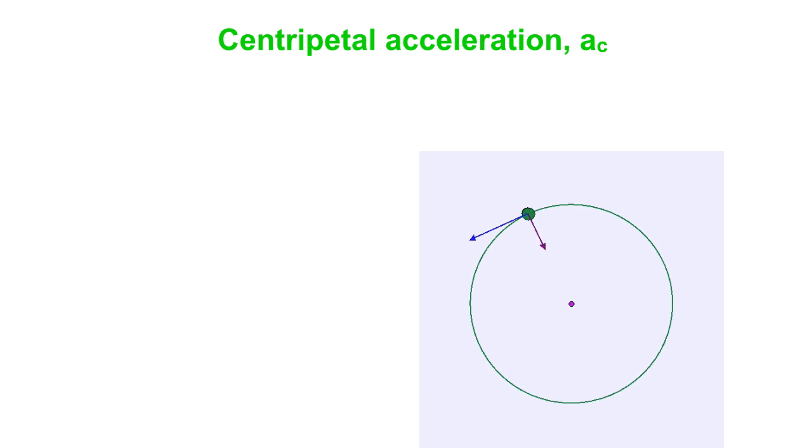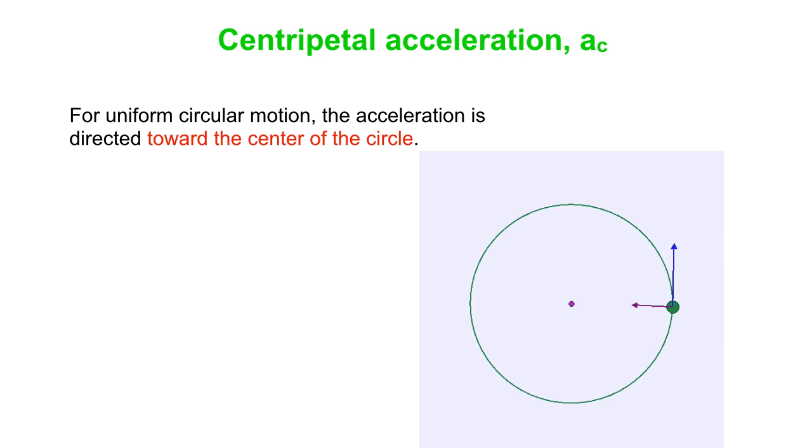So we'll summarize what we call the centripetal acceleration. And that is indicated by that purple vector on the diagram there, which always points toward the center of the circle. So the acceleration for uniform circular motion is always toward the center of the circle. And the magnitude is simply V squared over R.